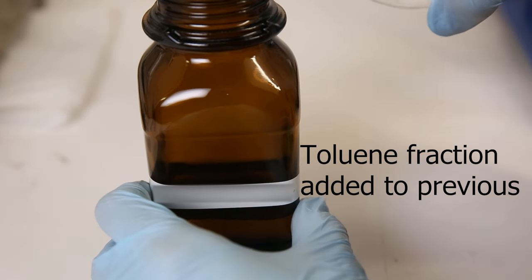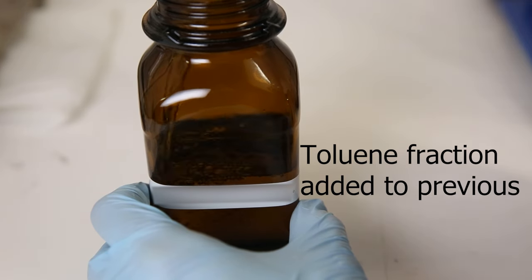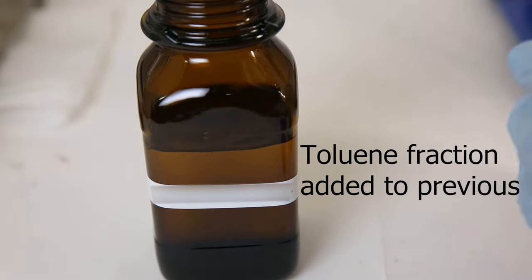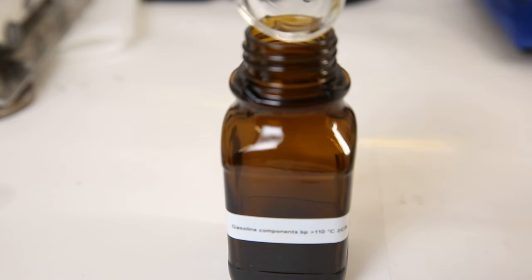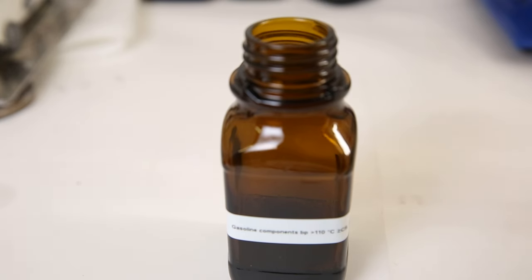Since the last fractions were overlapping somewhat, I decided to put the toluene fraction with the previous fraction, and separate them better by distilling it a second time. I put the liquid that was left behind in the flask in a separate bottle, which should contain high boiling point compounds like xylene, octane, and other hydrocarbons with 8 or more carbons.